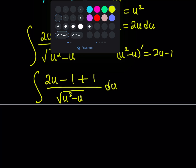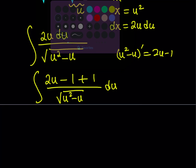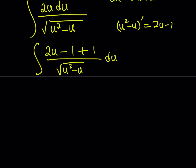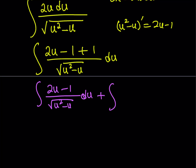At this point I'd like to separate them. I can write it as a sum of two different integrals and integrate each one — that makes it a little easier to solve. The first part is going to be (2u minus 1) divided by the square root of u squared minus u, du. And the second piece is du over the square root of u squared minus u.